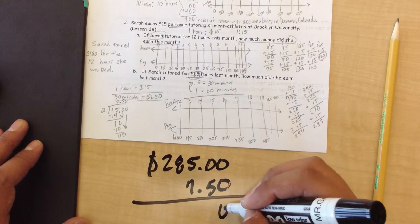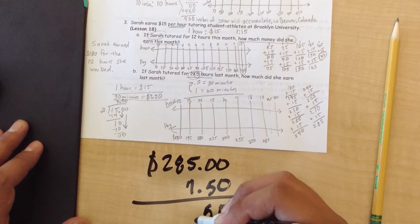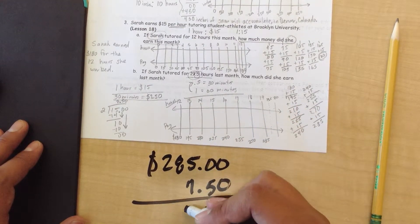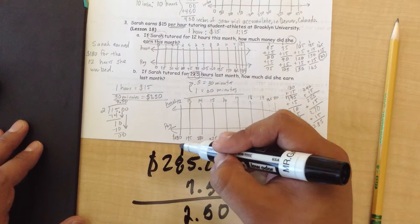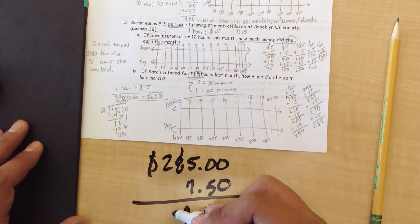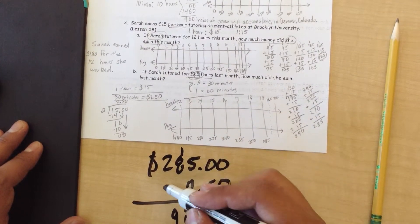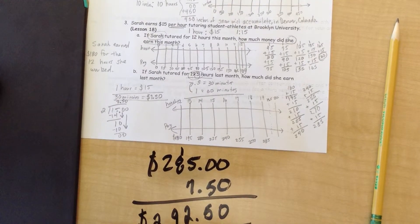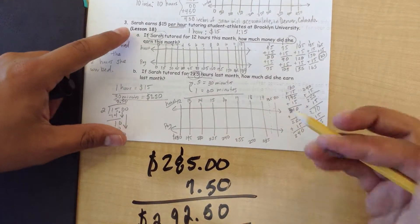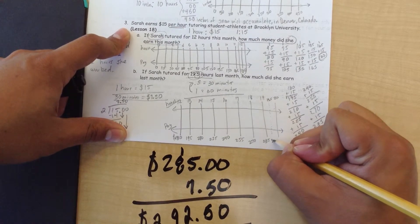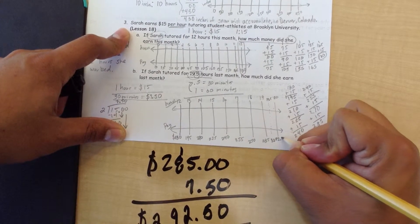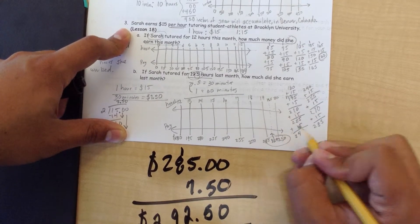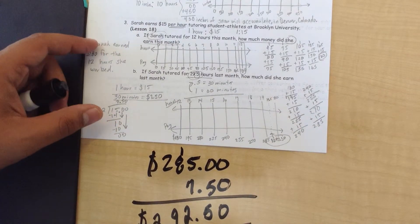Let's go ahead and find out that 19.5. So 0 plus 0 is 0, 0 plus 5 is 5, 5 plus 7 is 12, carry the 1 over, 1 plus 8 is 9, and the 2 plus nothing is nothing. We can fill that in here. 292.5. We make sure we circle it.